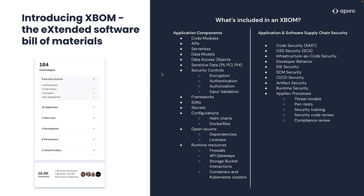The XBOM also ties to things like what types of vulnerabilities or risks are we seeing within that application. As we run SAST scanners or SCA scanners, where are those vulnerabilities and how do they tie directly to the components within that application? As well as things like developer behavior — who's actually working on these particular applications and which part of these code repositories are they working in? Are they new developers? Are they experienced developers? All the way through things like runtime security and different types of app sec processes like threat modeling, pen testing, security training, compliance reviews — all of these things are what make up that software and determine what that software does, what types of technologies are in it, as well as whether that software has any inherent risks that you as either the buyer or the manufacturer should know about.